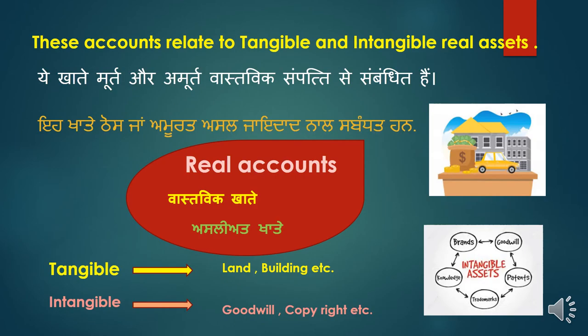Next is the real account. These accounts relate to tangible and intangible real assets of the business. Tangible assets are those we can see and touch — they have a physical form — like a building, a car. All accounts related to tangible assets like land account, building account, and intangible assets like goodwill account, copyright account — all of these come under real accounts.